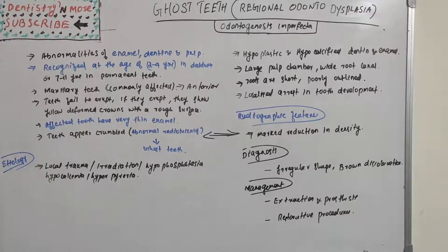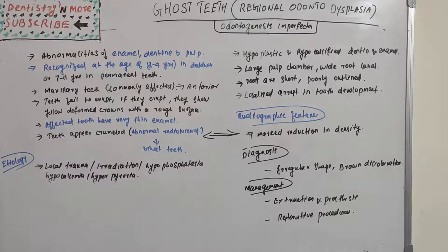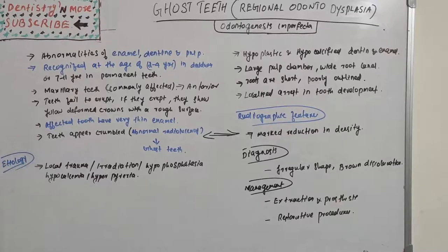During the period when maxillary central incisors, lateral incisors, and canines are erupting — most commonly seen in maxillary anterior teeth — these teeth sometimes fail to erupt entirely. If they do erupt, they show a yellow, deformed crown with a rough surface.